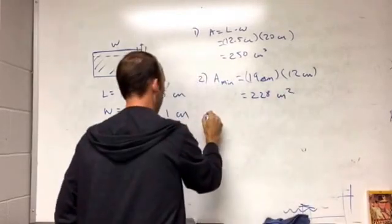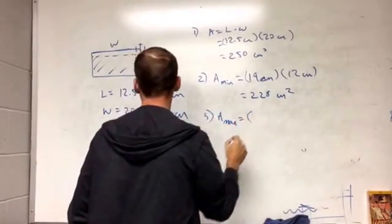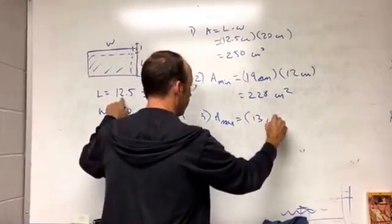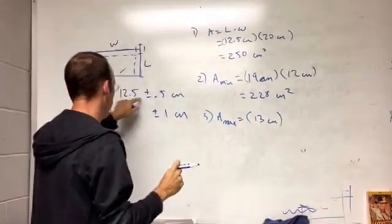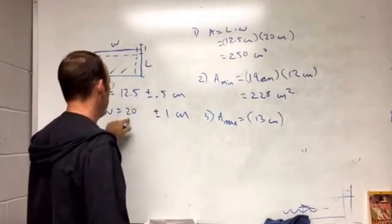Now the third crank, I'm going to calculate the maximum. So it's the same thing, I'm going to have 13 centimeters because that's 12.5 plus 0.5, so the maximum I will get would be 13, and the maximum here would be 21.